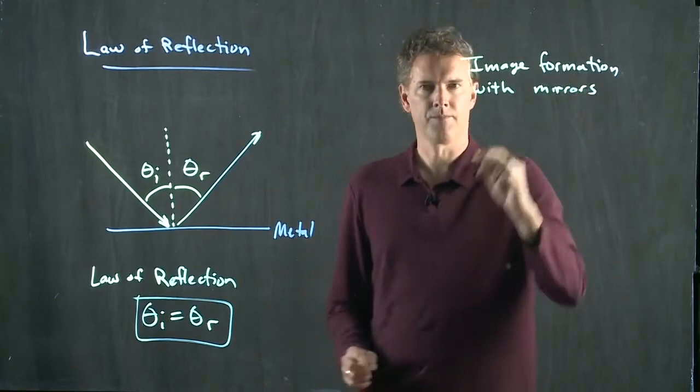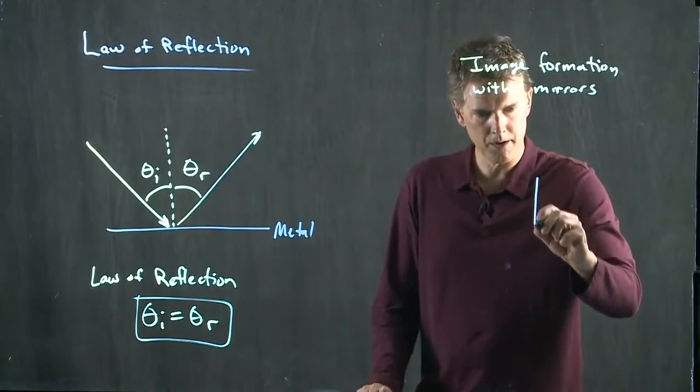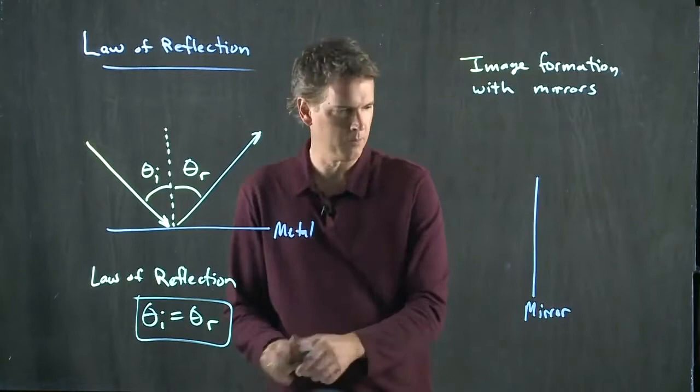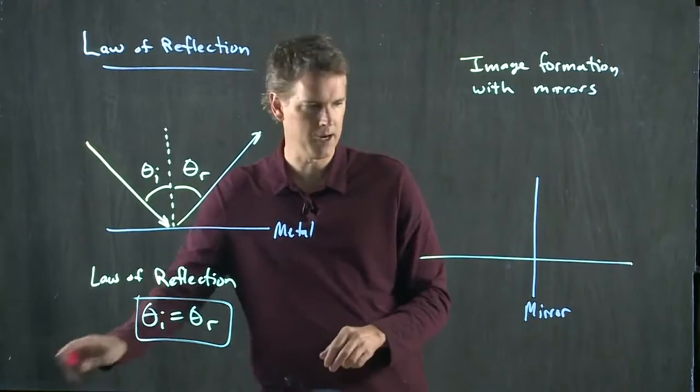Let's draw the following picture. We've got a metal mirror that we're going to make vertical. Let's put in what we call the optic axis, and let's put an object right here.